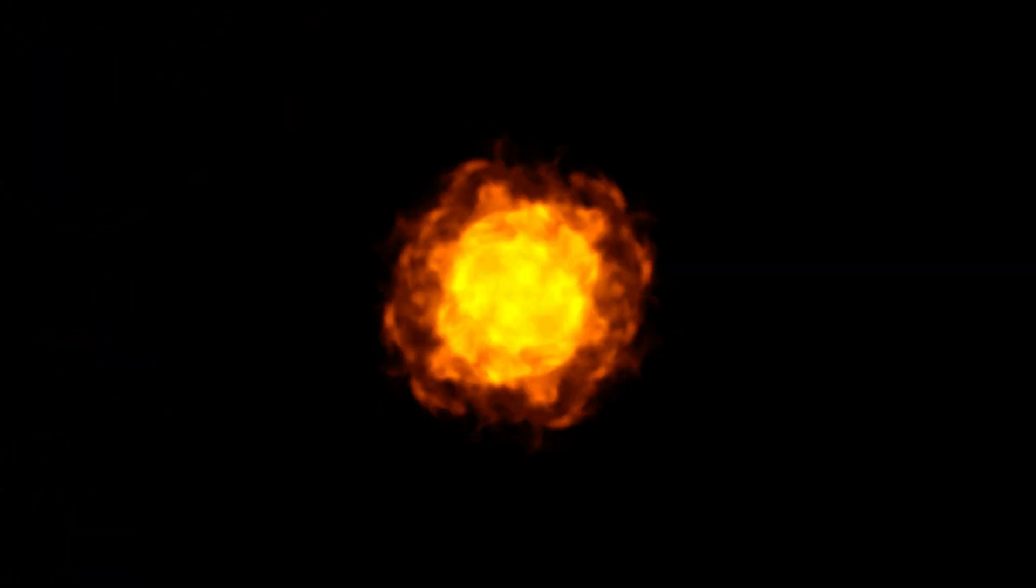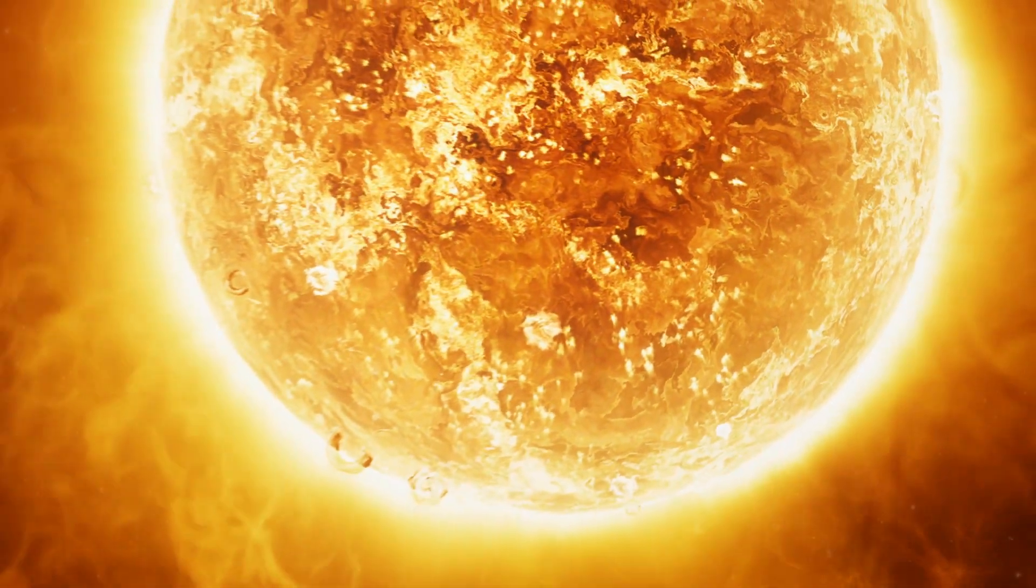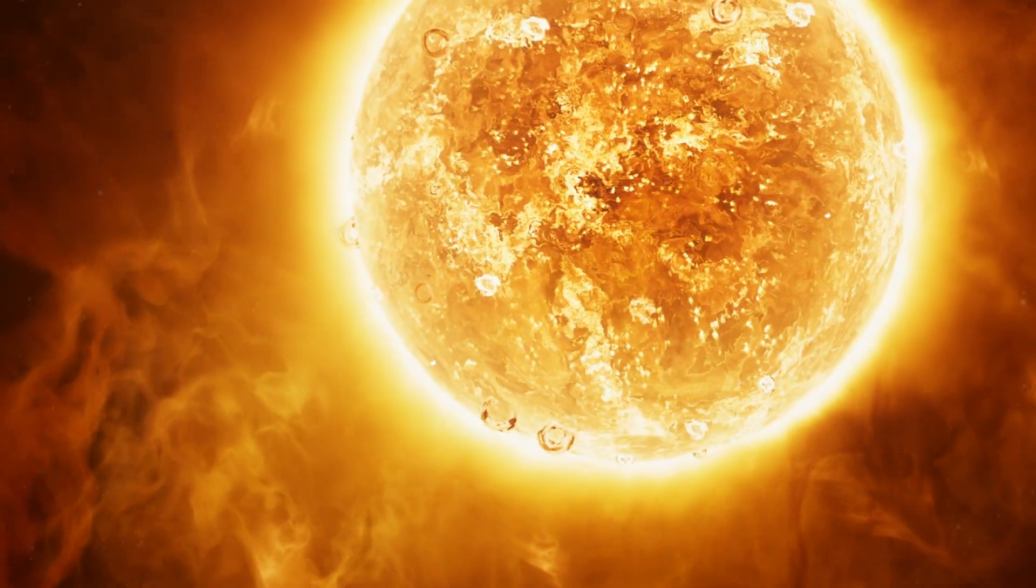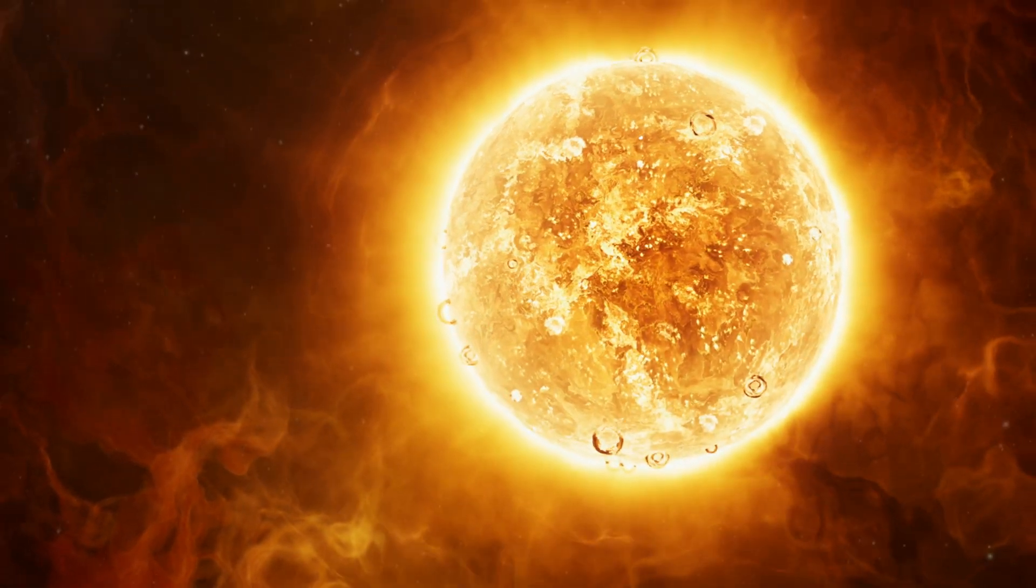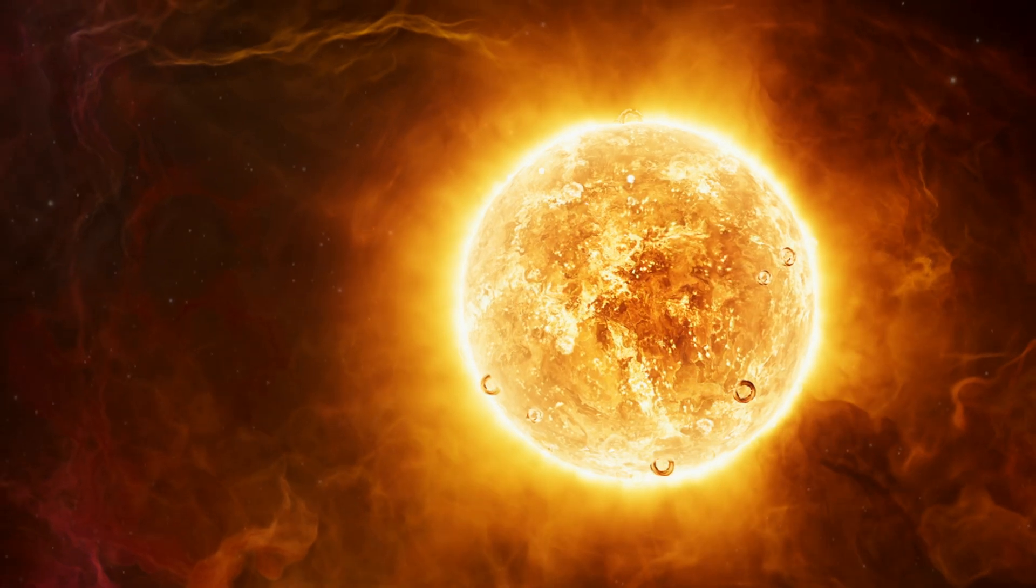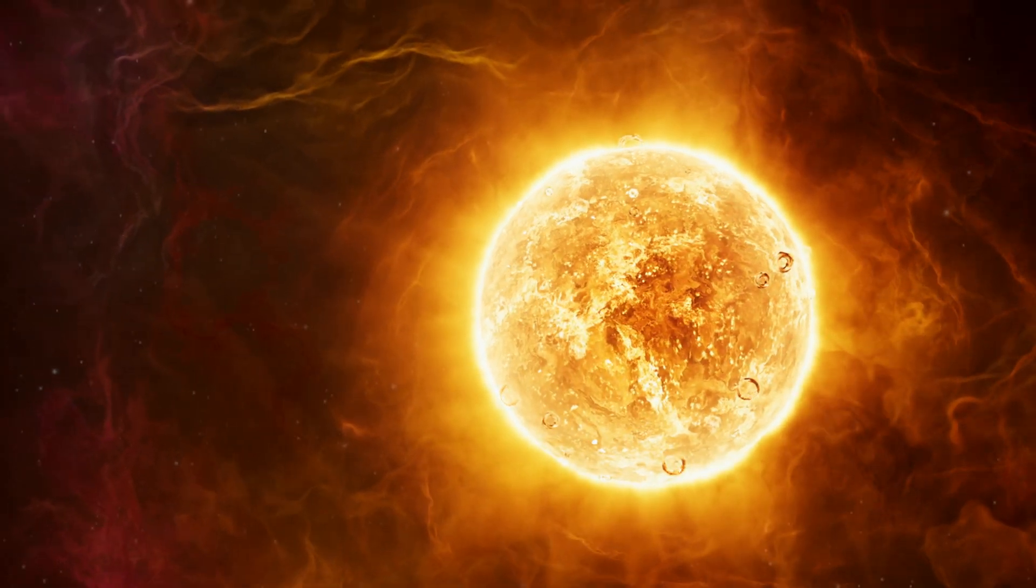This energy pushes outward against the gravity, creating a balance that keeps the Sun stable. The Sun has been shining like this for about 4.6 billion years, and it's expected to continue shining in roughly the same way for another 5 billion years or so.